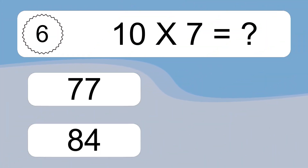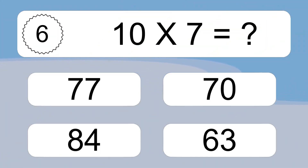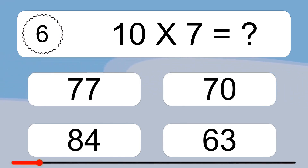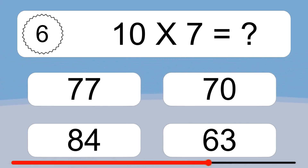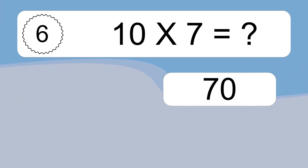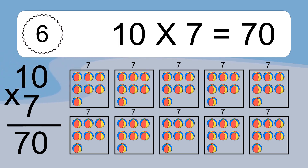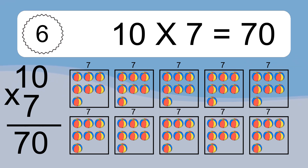Ten times seven equals what? Ten times seven equals seventy. We have ten boxes, and each box has seven colorful balls inside. If you count all the balls in all the boxes together, you will have ten times seven balls. This equals seventy balls.